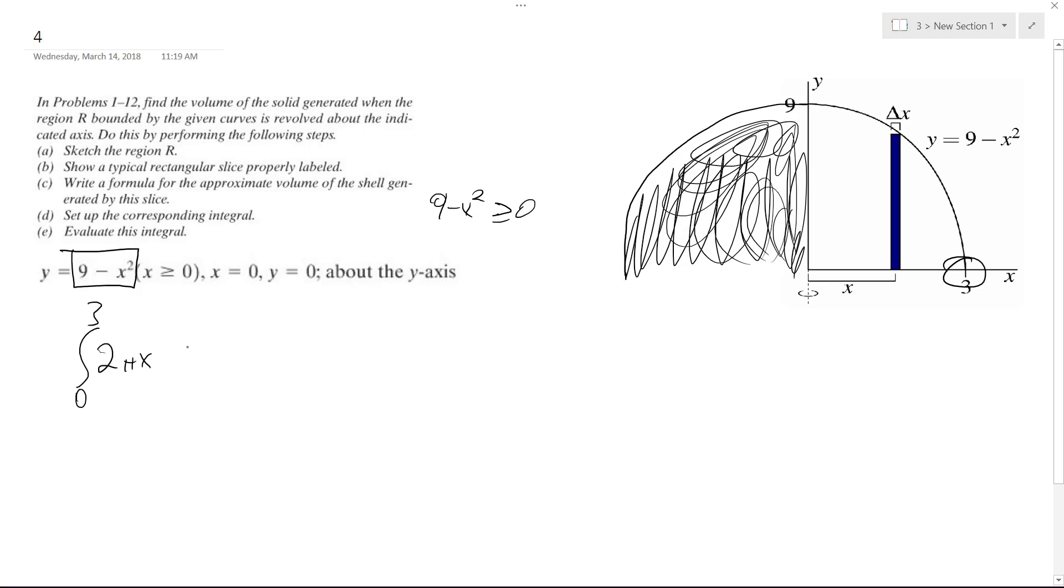So 2 pi x, and then quantity 9 minus x squared. So we pull out the constants, and we have to deal with those, and then we end up with 9x minus x cubed,